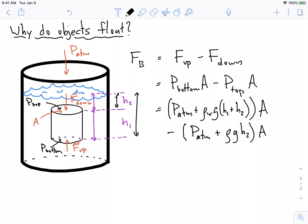Okay, and we see that a lot of stuff actually cancels out here. We see we have a P atmospheric times A minus a P atmospheric times an A. So that cancels. And we also see that we have a rho G times H2 minus a rho G times H2. So this H2 term cancels as well. And what are we left with? Well, we're left with just this little piece.